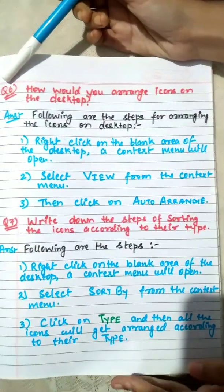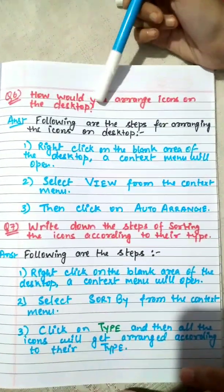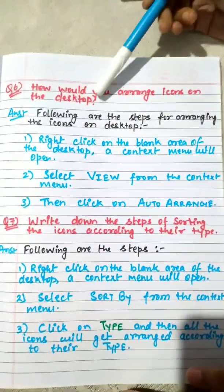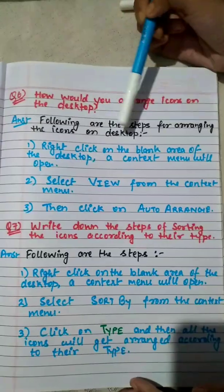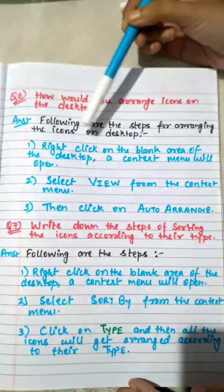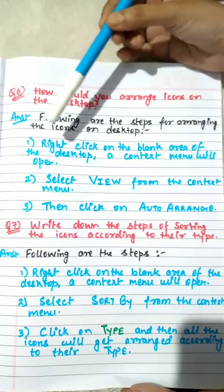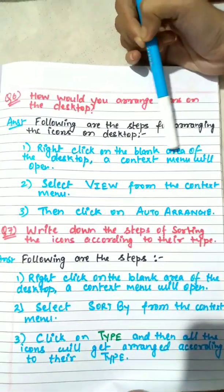Next question number 6: How would you arrange icons on the desktop? Following are the steps for arranging the icons on the desktop. First of all we will right click on the blank area of the desktop. A context menu will open.